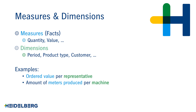Dimensions slice measures and are categories. The examples on screen — period, product type and customer — can be used to slice measures. An example of putting these two together: the ordered value per representative, where ordered value is a measure and representative is a dimension. Similarly, amount of measures produced per machine is another example of using measures and dimensions together.